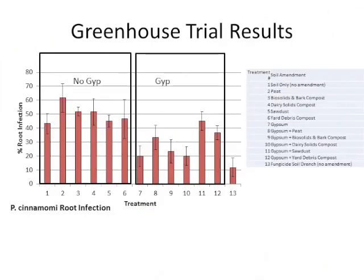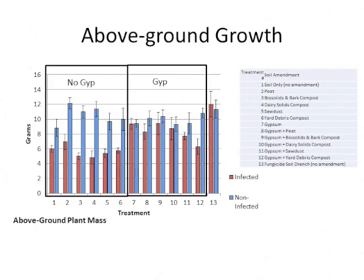Getting into the results: treatment one is a soil-only control, treatment seven is soil with gypsum. Treatments two through six are the various organic matters, and pairing two with eight represents the same organic matter without gypsum versus with gypsum. All the gypsum treatments had significantly less root infection than the non-gypsum treatments, so we were getting some suppression from the gypsum.